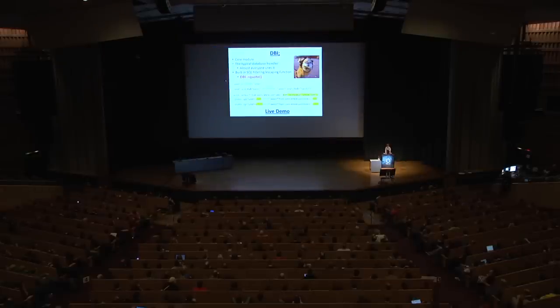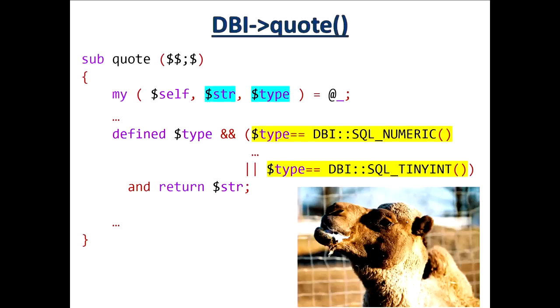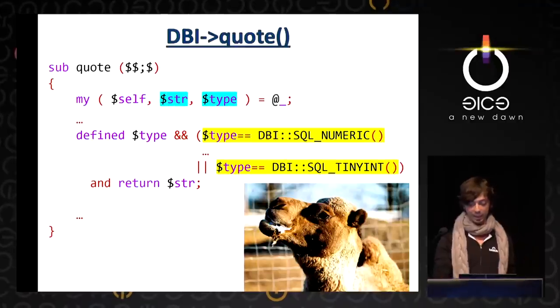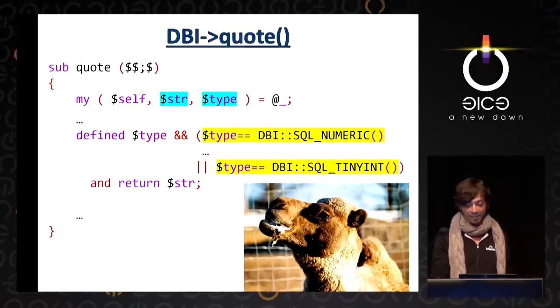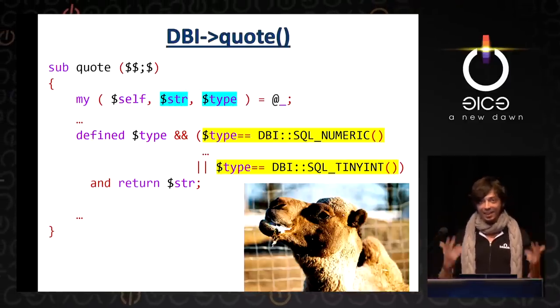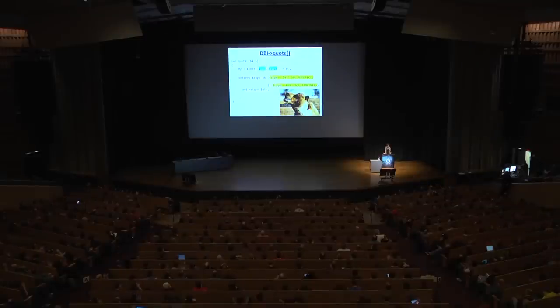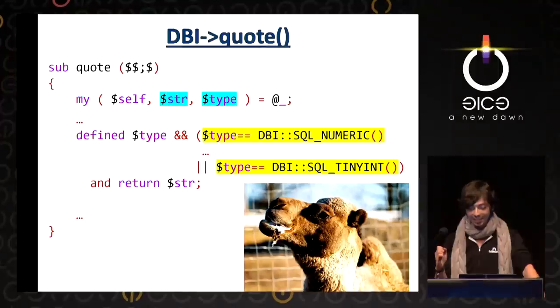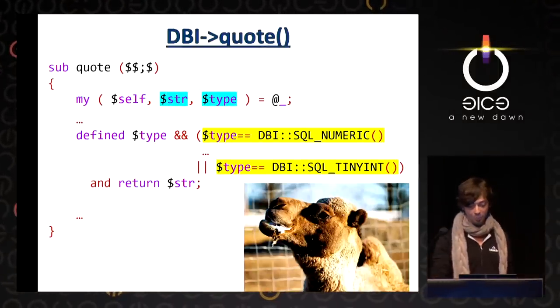That happens because quote takes, in fact, two arguments: the string to quote and its type, which defaults to string. Quote matches the type against several constants declared in the module — these constants are just numbers ranging from two to eight. When we insert the number two as the second argument, quote thinks the string is an integer and decides to return it as-is without escaping it. That's the second fail: the function didn't even validate that we inserted an actual number.